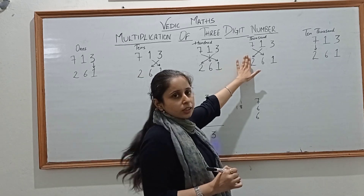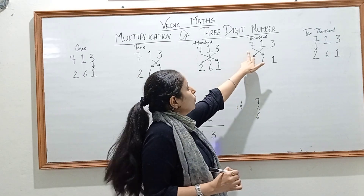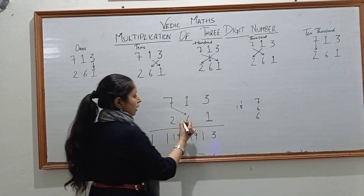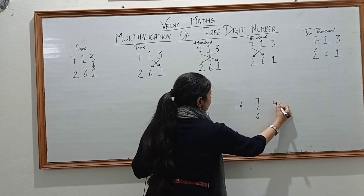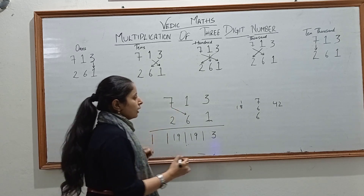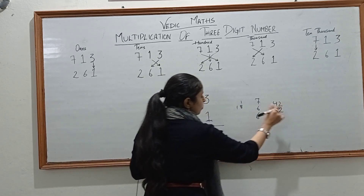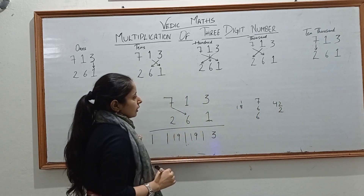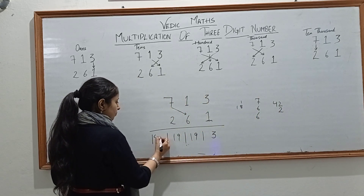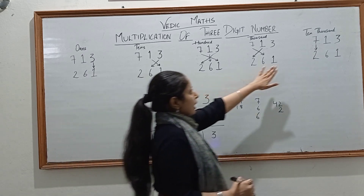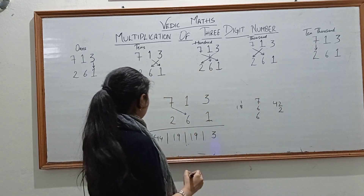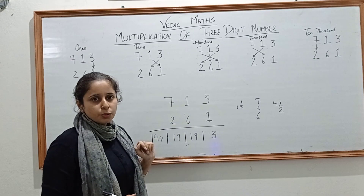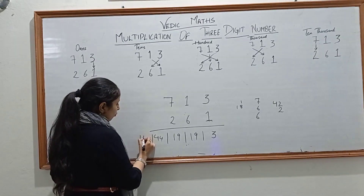For the digit on the 1000th place, use cross multiplication: 7 into 6 is 42, and 2 into 1 is 2. Two products are here. Add them: 42 plus 2 gives you 44. Now the digit on the 10000th place comes by multiplication of 7 into 2, which gives you 14.